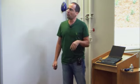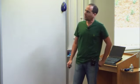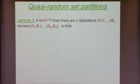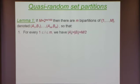There is only one ingredient which I will not prove: the following lemma. Suppose I have a positive integer small m, and capital M which is exponential in small m. Then I can construct m partitions of a universe of size capital M — I will denote these partitions by A_1, B_1, up to A_m, B_m — such that two conditions are satisfied. The first condition is that each partition breaks the universe into two sets of equal size, capital M over 2.